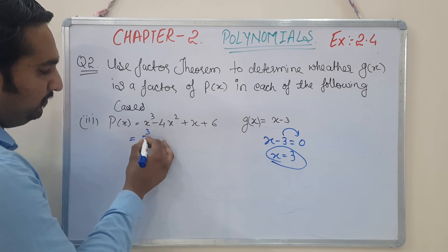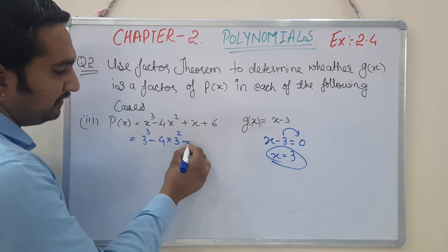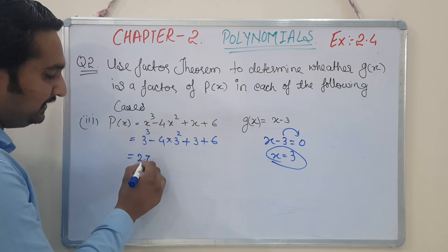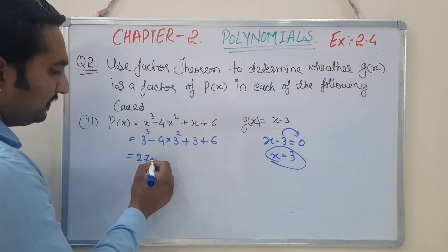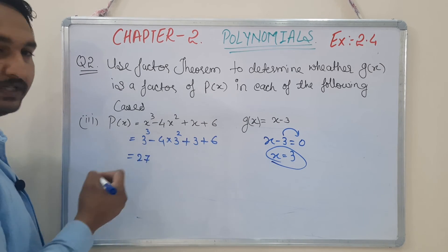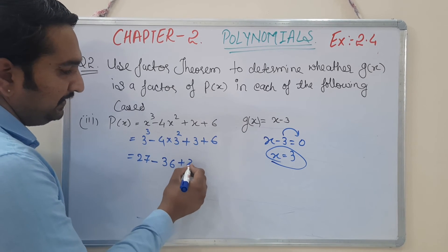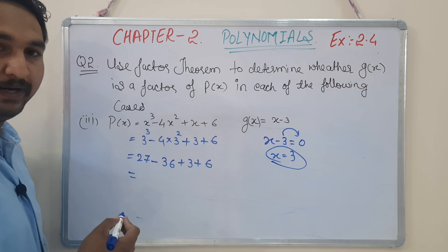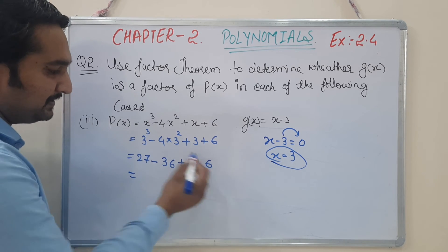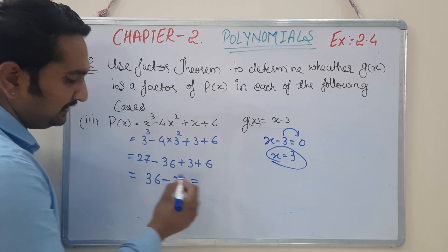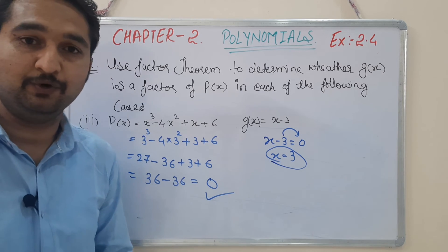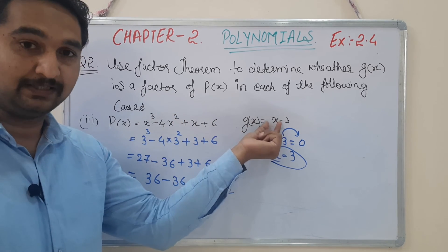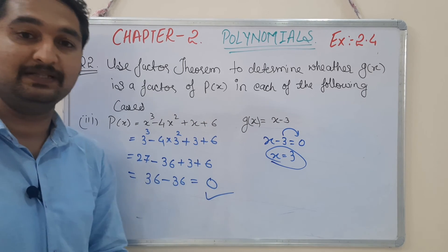Substituting x = 3: 3³ - 4×3² + 3 + 6. Now 3³ = 27, and 3² = 9, so 4×9 = 36. This gives: 27 - 36 + 3 + 6. Adding the positives: 27 + 3 + 6 = 36. Minus 36. So 36 - 36 = 0. Final answer is 0, so we say g(x) IS a factor of p(x). Yes!